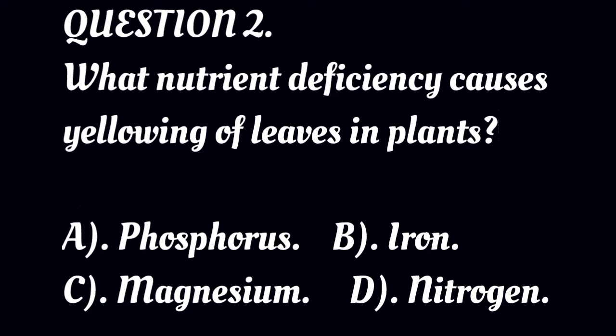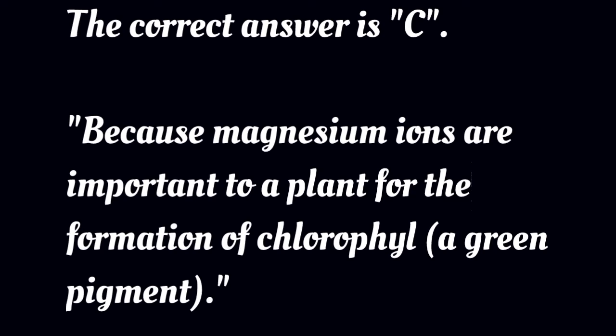A: phosphorus, B: iron, C: magnesium, D: nitrogen. The correct answer is C because magnesium ions are important to a plant for the formation of chlorophyll, a green pigment.